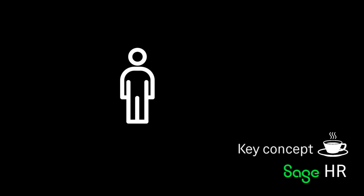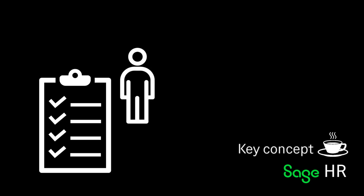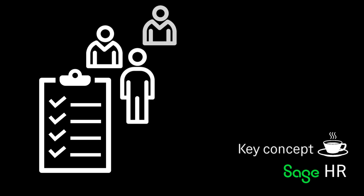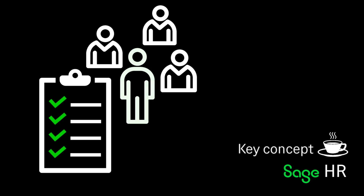You can organize your onboarding process by assigning a predefined task list to new employees, their manager, or another employee who needs to support the process. This ensures that no important actions are missed and progress can be tracked.